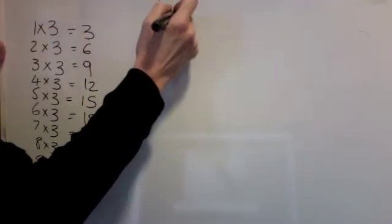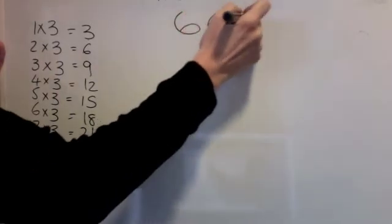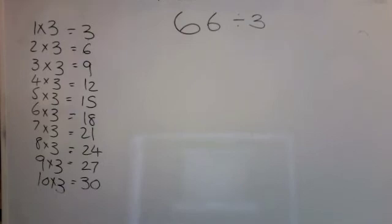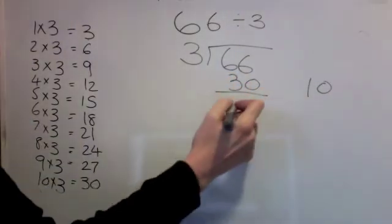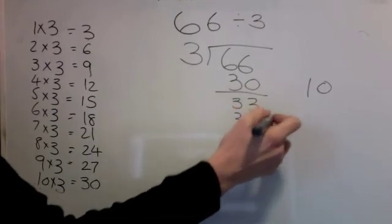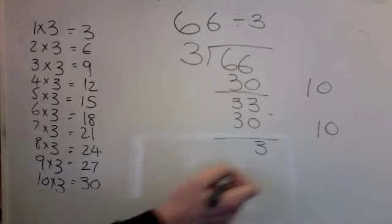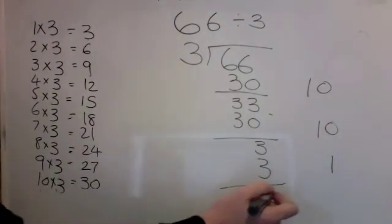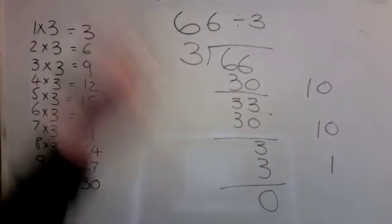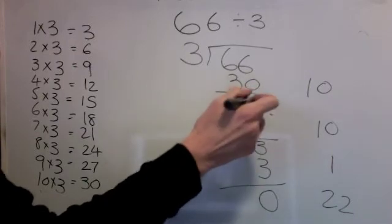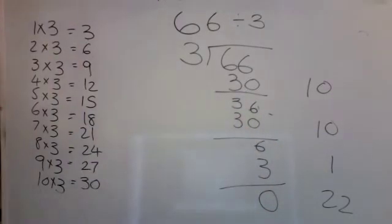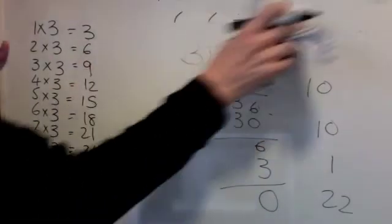Last one: 66 divided by 3. Pause the video and have a go. Here's the answer. 30 is my closest number — 10 3's are 30. 30 again — 10 3's are 30. 3 is in the times table and 1 three is 3. Add them together — and the answer is 22. Sorry about that — I've done that wrong. Better do one last one because I made a mistake.